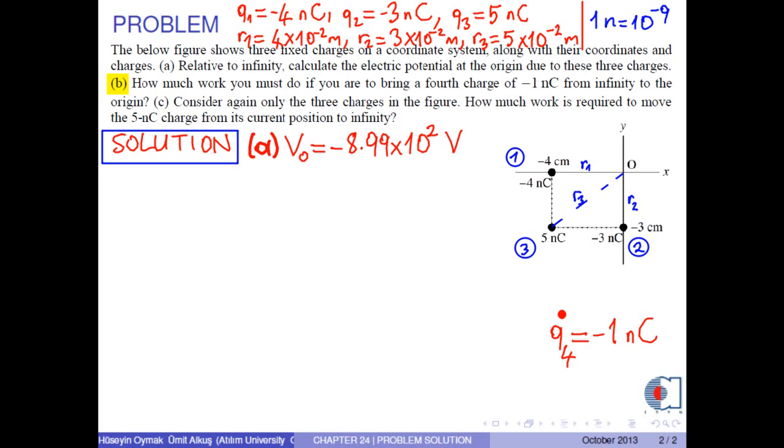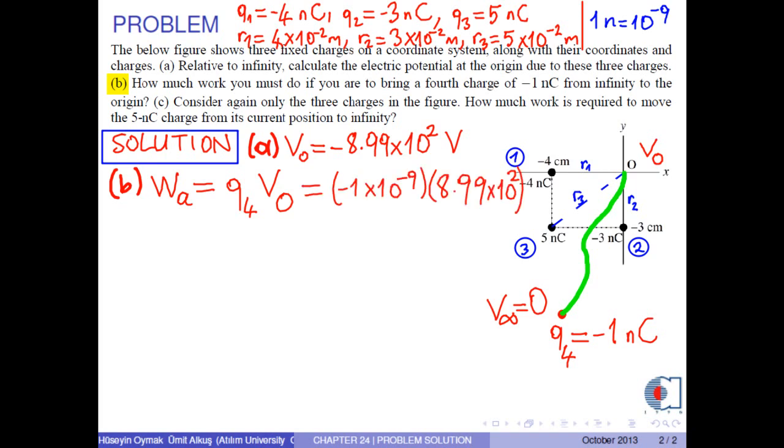At infinity, the electric potential is zero. So, you must do the work to bring Q4 from infinity to the origin, Q4 times V0. With the numerical values, we obtain the work as positive 8.99 times 10 to negative 7 joules.